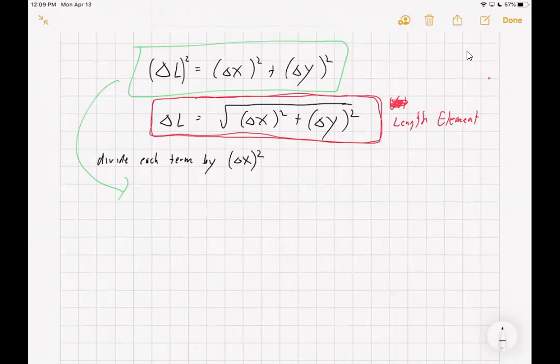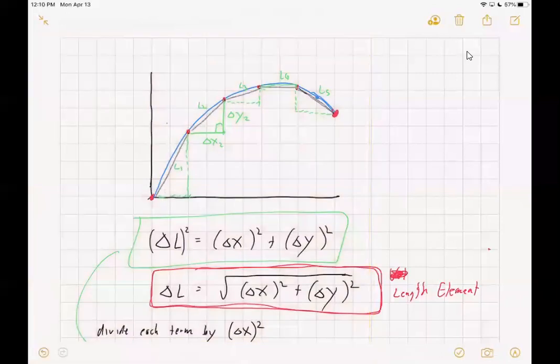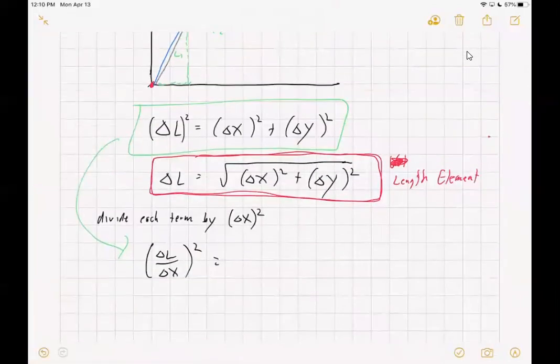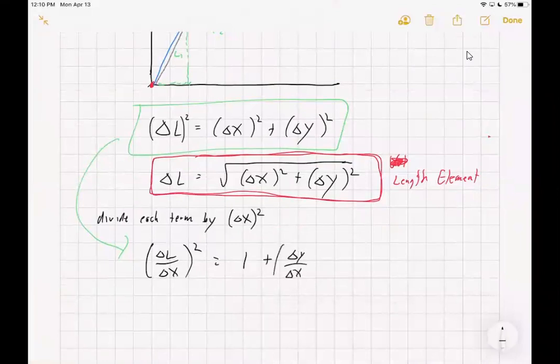So if we do that to the first term, we can see that that gives us delta L over delta x squared. Then we can look at the second term: delta x squared divided by delta x squared will just be one. The second term on the right, delta y squared, when you divide that by delta x squared, we can rewrite that as delta y over delta x, the quantity squared, and combine those together.